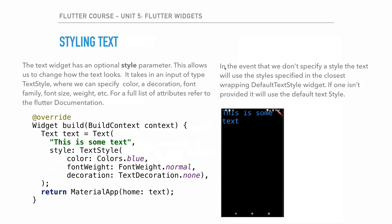One thing to note: if we don't specify a style, the text will use the style from the closest wrapping DefaultTextStyle widget. If none is provided, a default style is used. So if we wrap a widget in DefaultTextStyle with, say, yellow color, any Text widgets inside that don't specify their own style will inherit that yellow color.